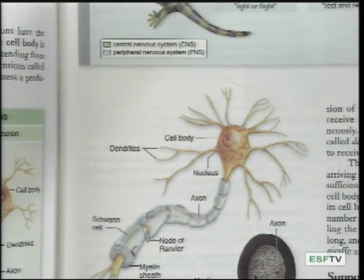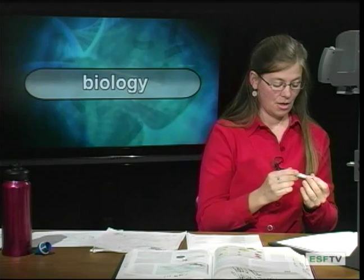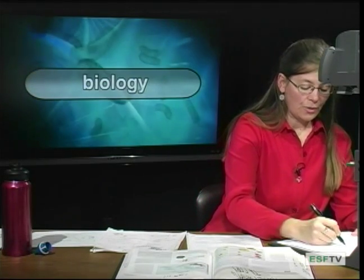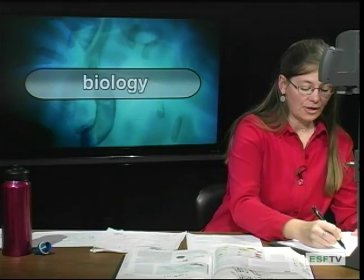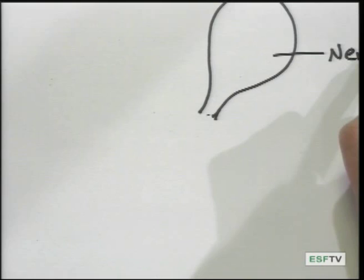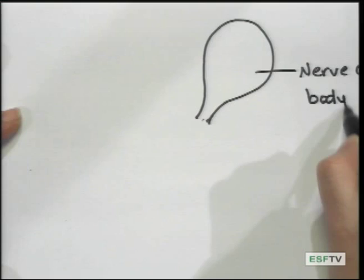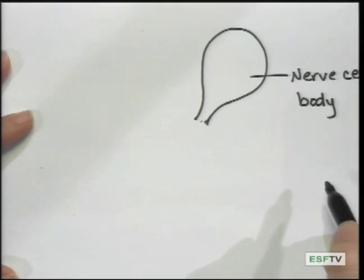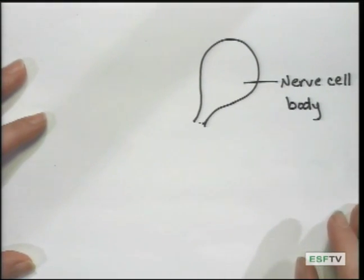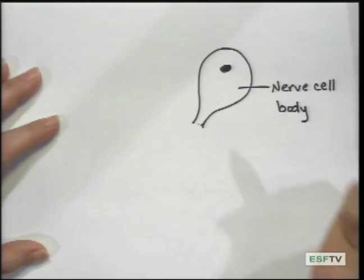So with that, let's take a chance here to draw this. We have the large structure — this nerve cell body — where you find the nucleus of the neuron.